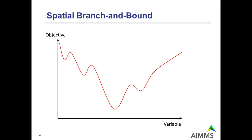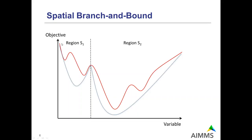The outer approximation and spatial branch-and-bound algorithms will be discussed in more detail, starting with spatial branch-and-bound. Assume we have a non-convex objective function with one variable and we are minimizing. What a spatial branch-and-bound algorithm (Baron) will do is split the region into two halves, S1 and S2, and then find convex underestimators for the function in each region — the blue lines shown in region 1 and region 2.